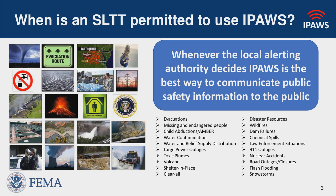What type of alerts do our users send? It varies. Everyone has different hazards — local hazards, state-level hazards — and that's how they determine what they're going to send. We do not tell them what to send; it is up to the local alerting authority. Some examples include missing and endangered people. The AMBER system is run by the National Center for Missing and Exploited Children, and some state agencies are permitted to issue AMBER alerts. Other examples include 911 outages, law enforcement situations, and chemical spills, depending on the incident.